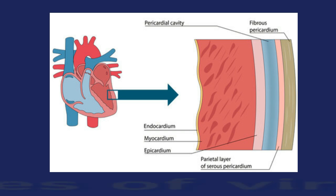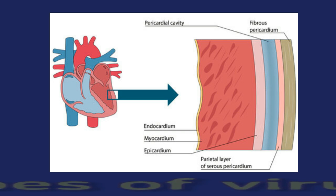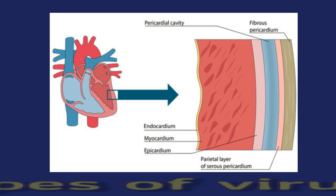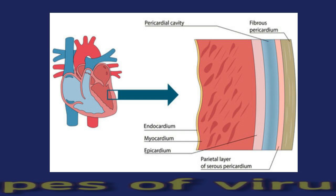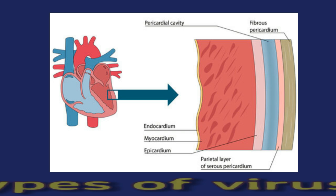Myocarditis involves inflammation in the myocardium — the middle muscular layer of the heart wall. In many cases, the exact cause of heart inflammation is unknown; however, viral infections are a common cause of myocarditis. According to a 2022 review, some of the most common viruses that cause viral myocarditis include the following.